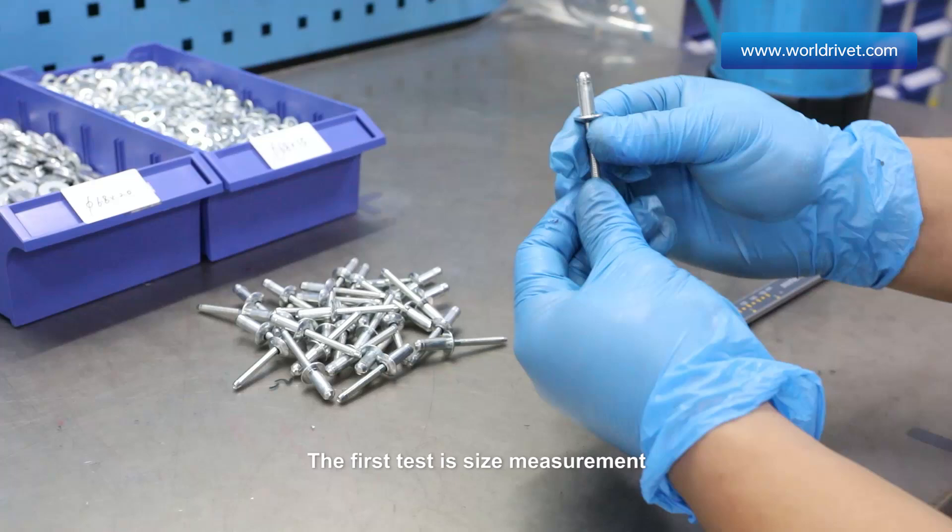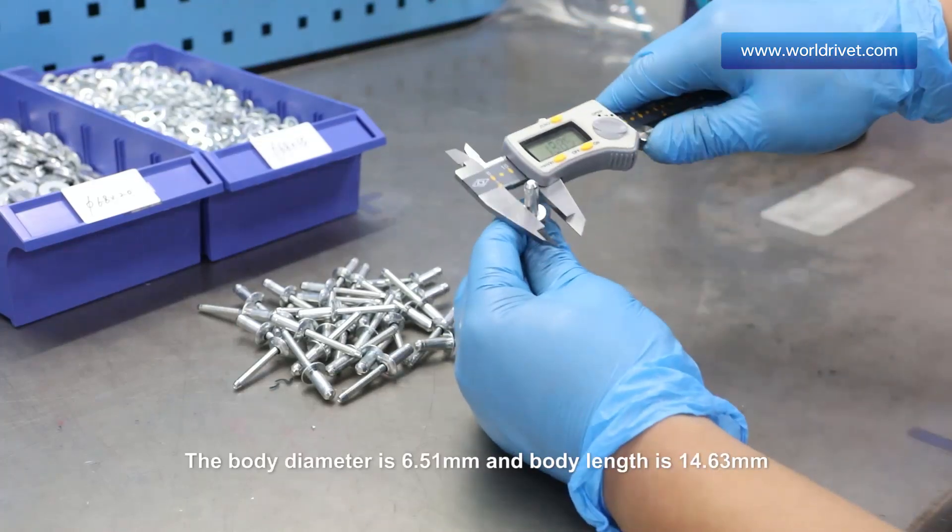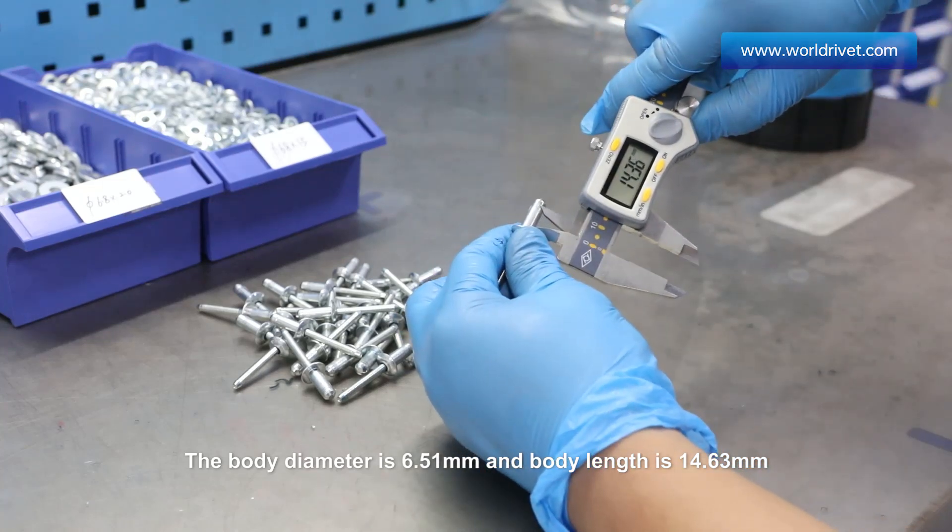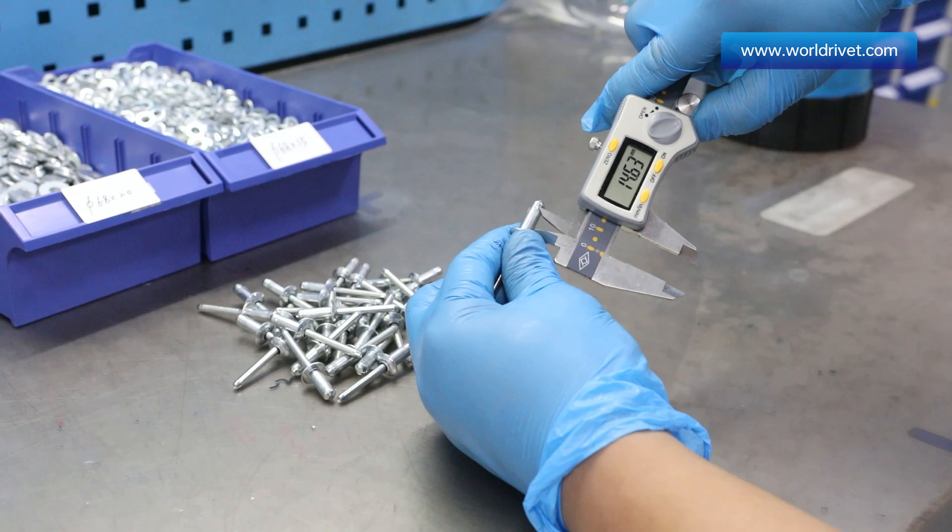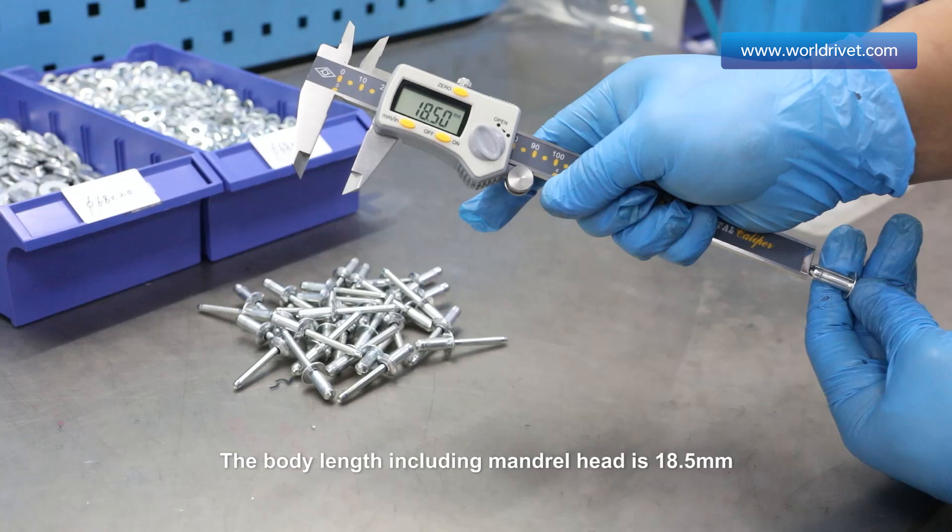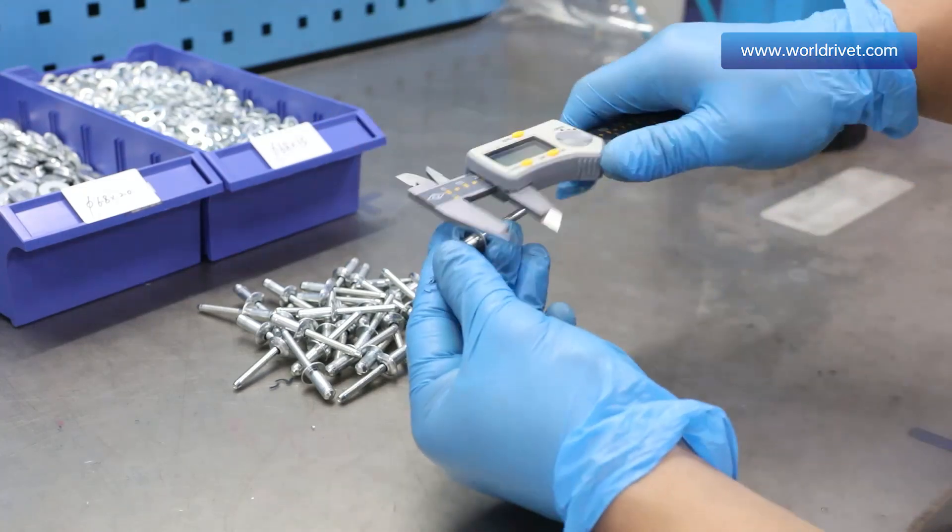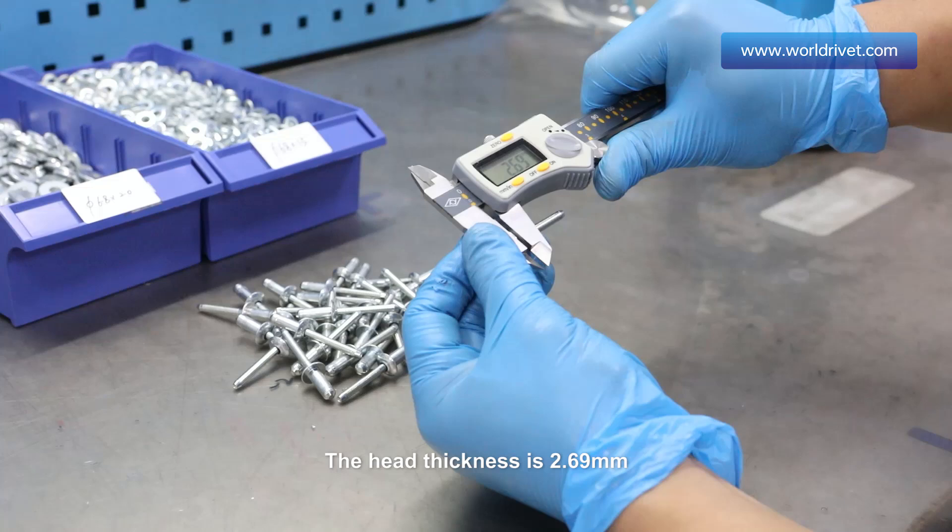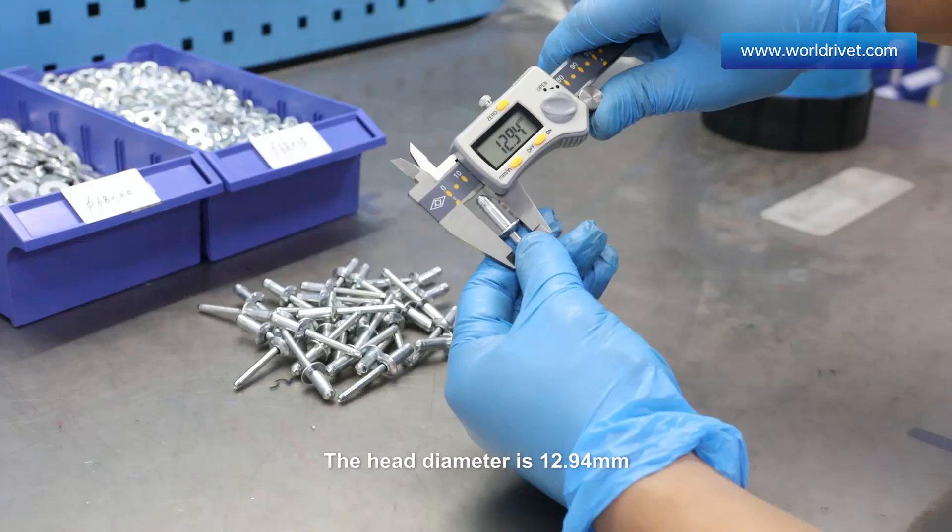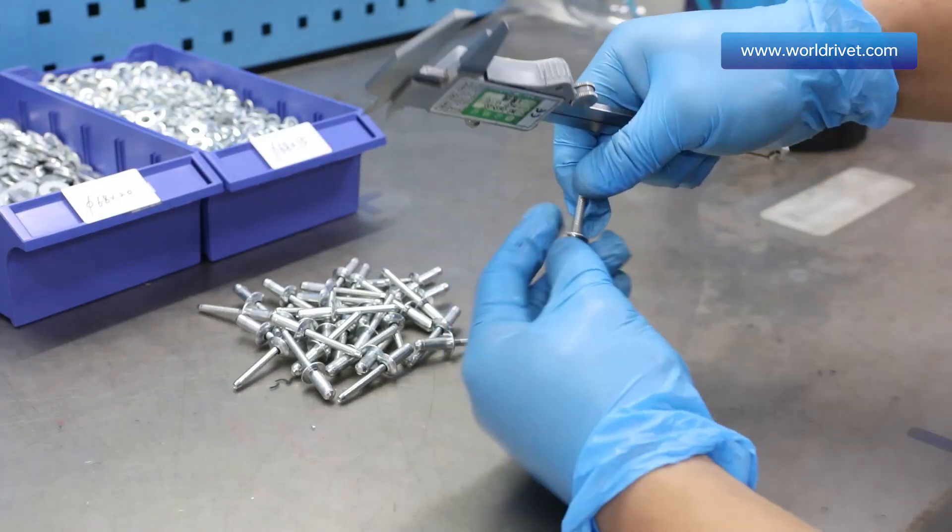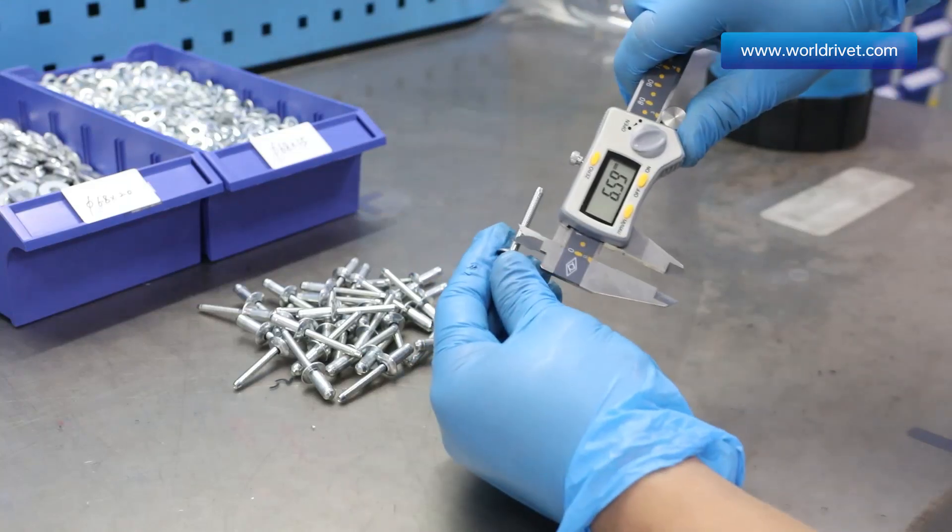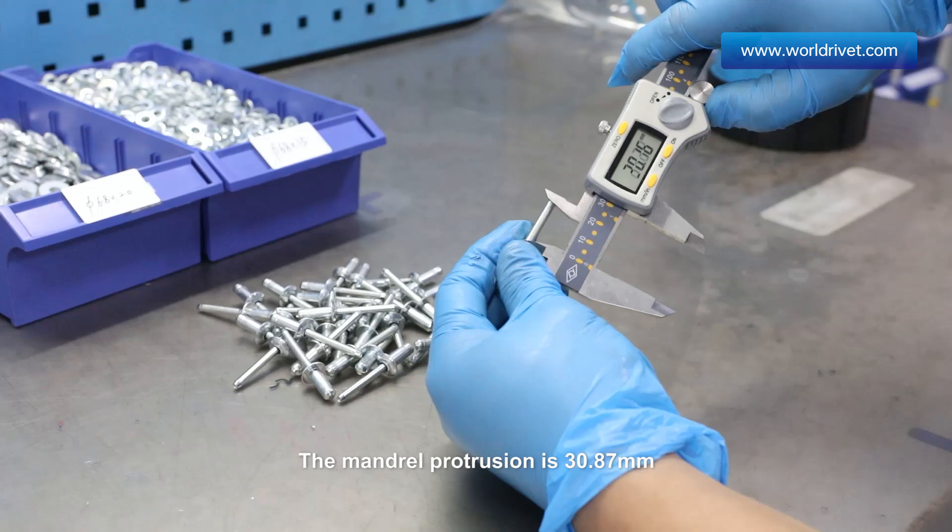The first test is size measurement. The body diameter is 6.51 mm and body length is 14.63 mm. The body length including mandrel head is 18.5 mm. The head thickness is 2.69 mm. The head diameter is 12.94 mm. The mandrel diameter is 4.12 mm. The mandrel protrusion is 30.87 mm.